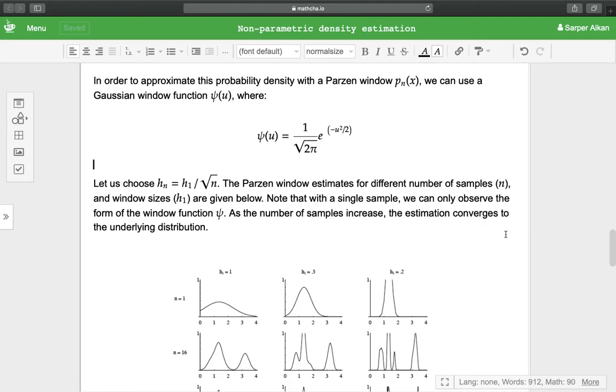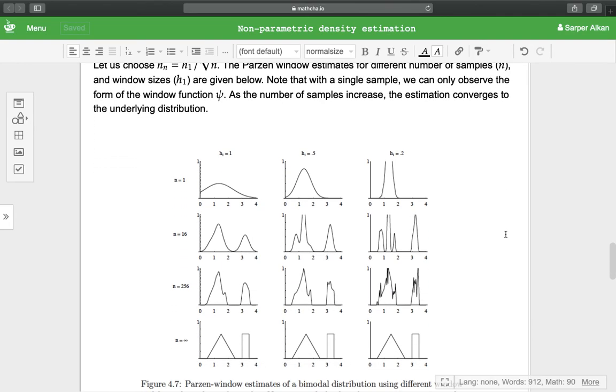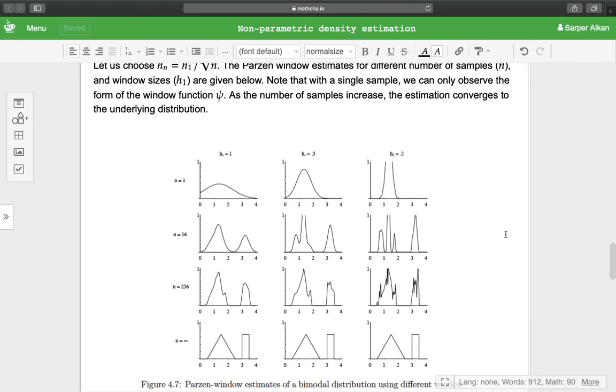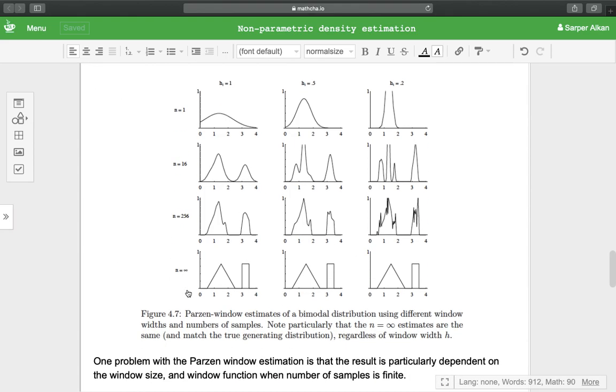So when we choose hn = h1 over square root of n, the Parzen window estimates for different numbers of samples and different window sizes can be seen below. Note that with a single sample, we can only observe the form of the window function φ. As the number of samples increases, the estimation converges to the underlying distribution function. So this is with 1 sample, this is with 16 samples, 256 samples, and as n goes to infinity, every time we can see the underlying test function.